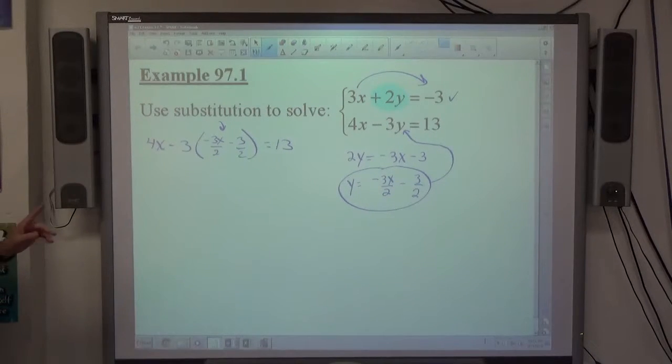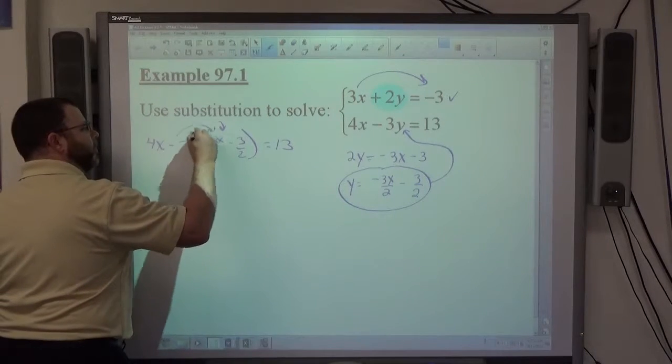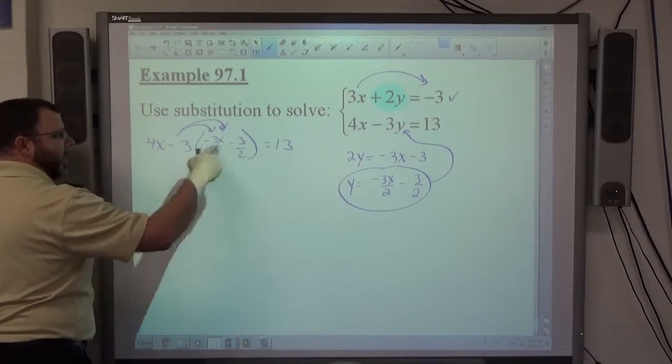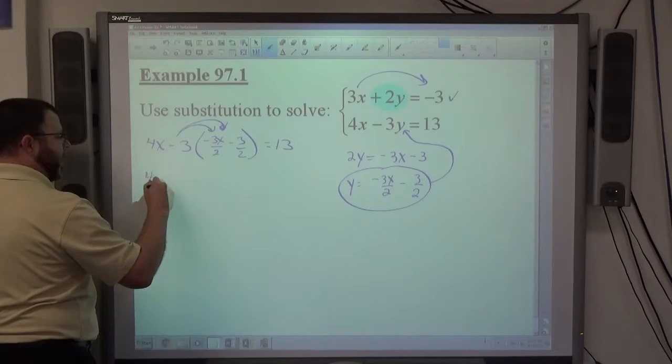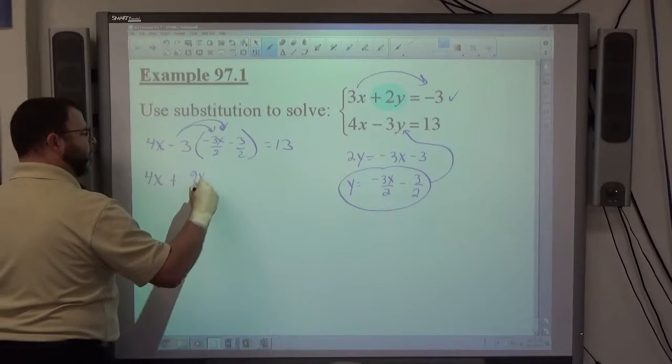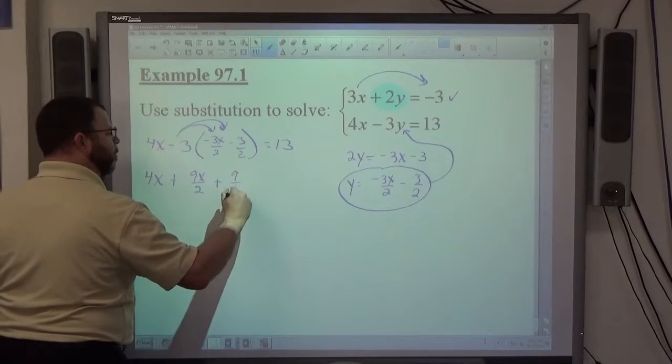The next thing I want to do now is I want to distribute to get rid of the parentheses. So if I take negative 3 times both of those, I'm going to get 4x plus 9x over 2 plus 9 over 2 is equal to 13.